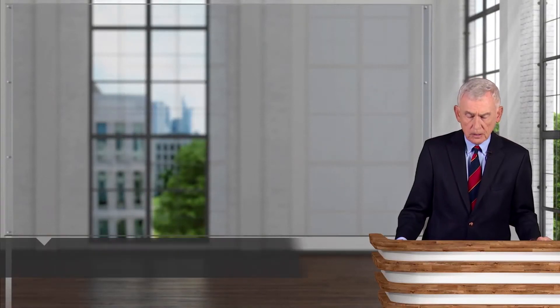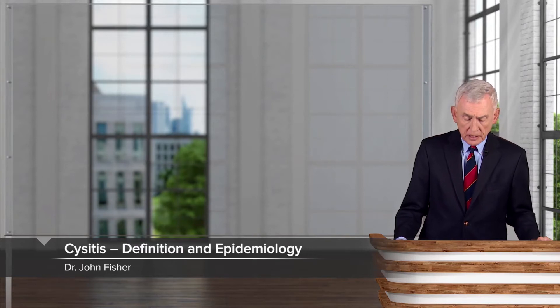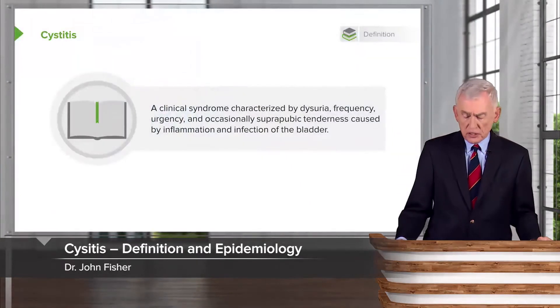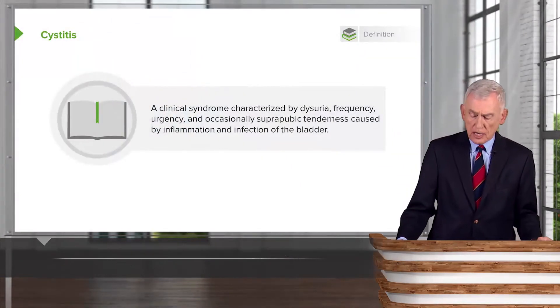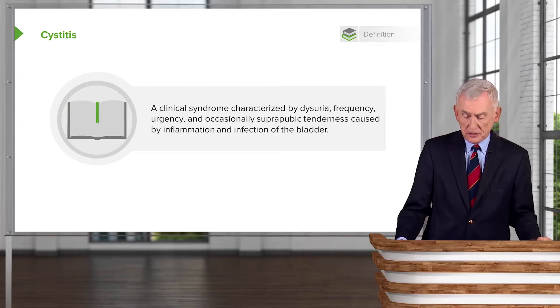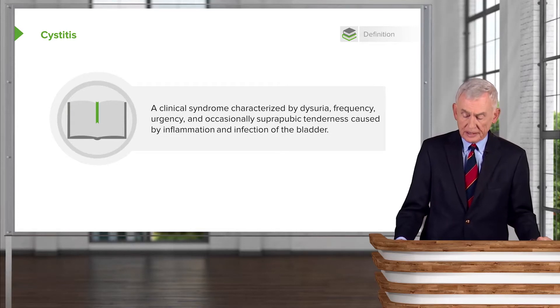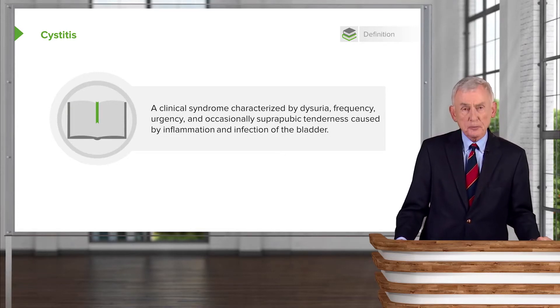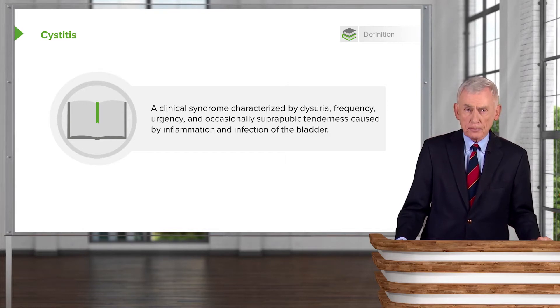In our discussion of urinary tract infections, we turn to cystitis. To define it, we'd call it a clinical syndrome characterized by dysuria, frequency, urgency, and occasionally suprapubic tenderness, caused by inflammation and infection of the bladder.